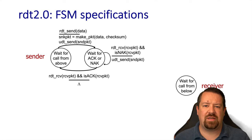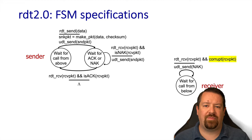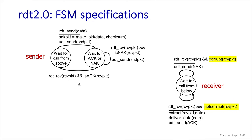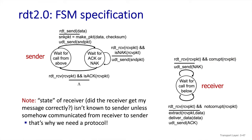On the receiver side, the state machine hasn't gotten much more complicated than RDT 1.0. The only state is still waiting for a call from below. But we have a new transition: when a packet is received and it's corrupt, known by checking the checksum, it sends a negative acknowledgement back and the packet is discarded rather than delivered to the application. If the packet received is not corrupt, then a positive acknowledgement is sent back and the data is delivered to the application. The sender can only know which case occurred based on the control message it gets back — either an ACK or a NAK.